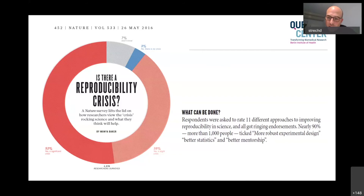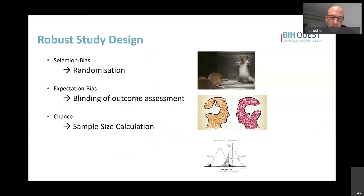When respondents were asked what can be done, nearly 90% said we need more robust experimental design, better statistics, and better mentorship. With better robust design, they primarily mean these three practices that address potential biases: selection bias can be reduced by randomization of animals into intervention or control groups; expectation bias of investigators can be reduced by blinding the outcome assessment; and we can reduce the influence of chance by having a proper sample size calculation.